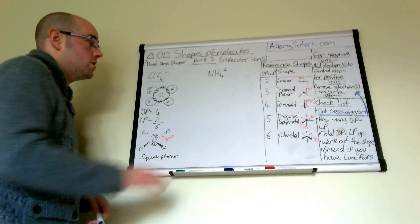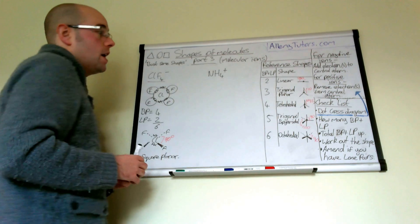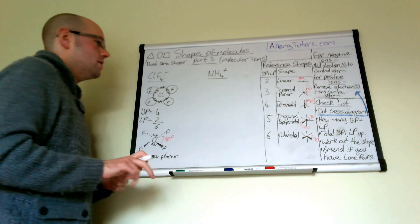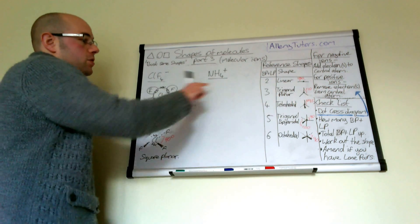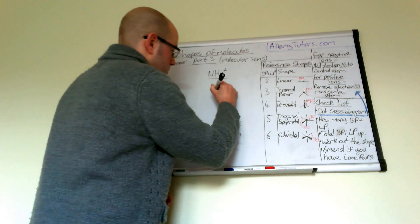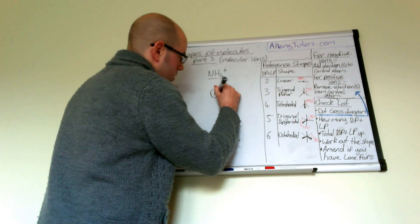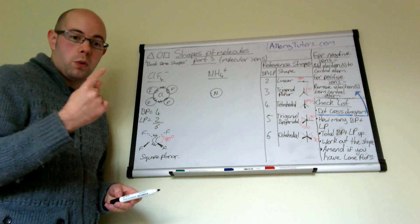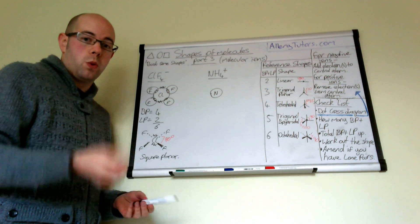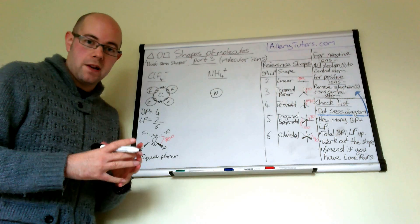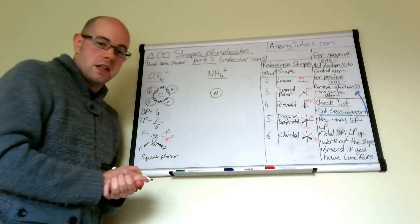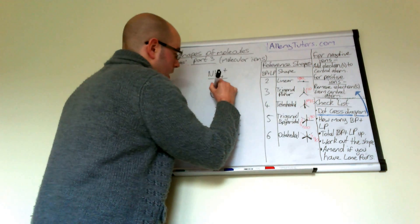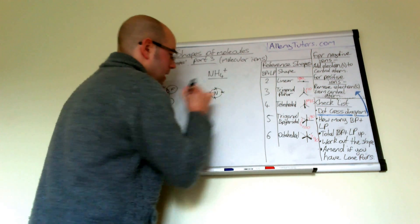The next one is NH4⁺. It's the same method except this time we've got a positive ion. We're going to start by looking at our dot cross diagram. We put nitrogen in the middle. Because it's a positive charge, we remove electrons — and because we've only got a one plus, we only need to remove one electron. Nitrogen is in group five, so it normally has five electrons in its outer shell, but we remove one because of the positive charge. So this nitrogen actually only has four electrons.